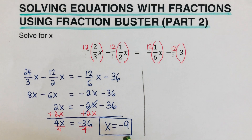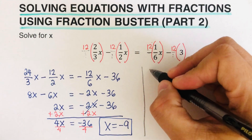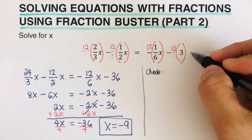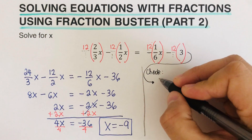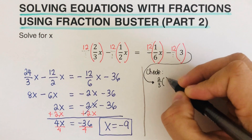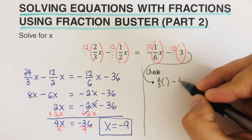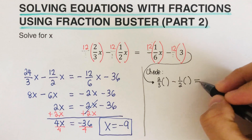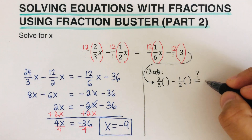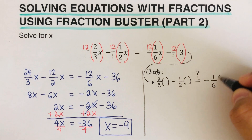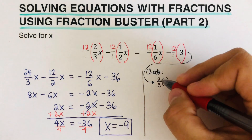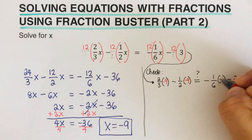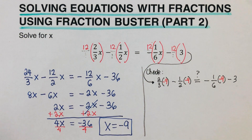To verify, we plug x equals negative 9 back into the original equation. We substitute negative 9 everywhere x appears: 2/3 times negative 9, minus 1/2 times negative 9, should equal negative 1/6 times negative 9, minus 3.